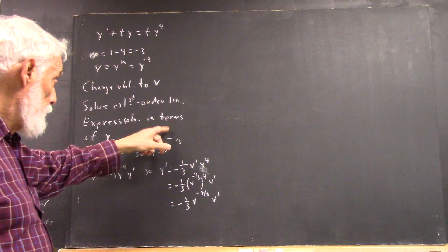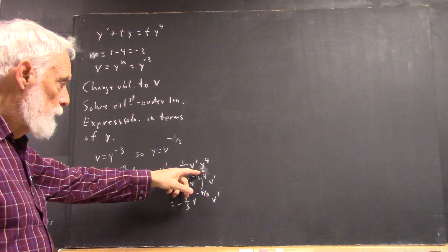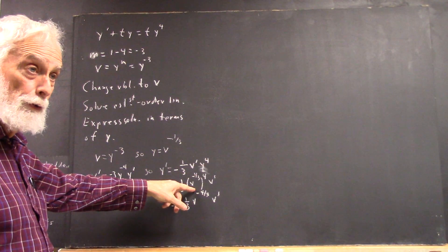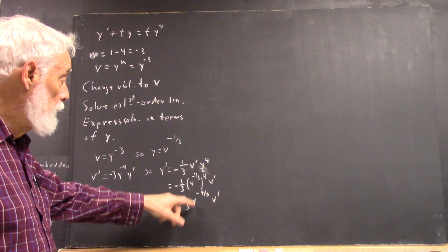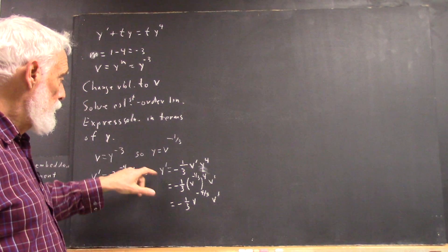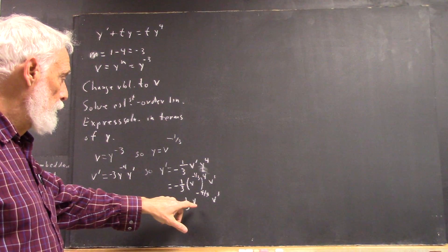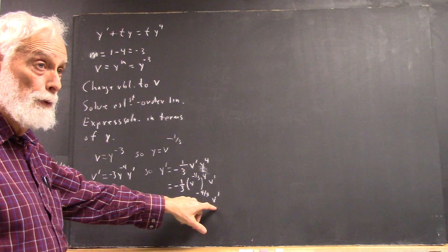And y being v to the negative one-third, we replace y by v to the negative one-third, the fourth power of which is v to the negative four-thirds. So we get y prime equals negative one-third v to the negative four-thirds v prime.